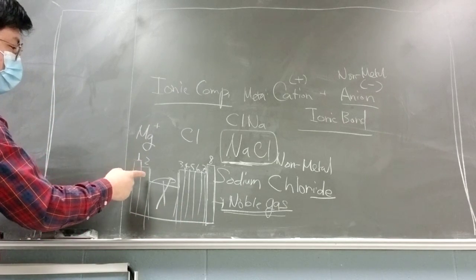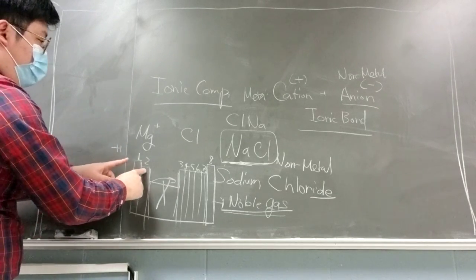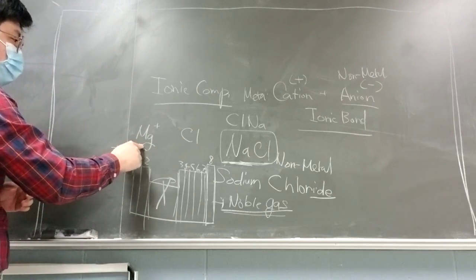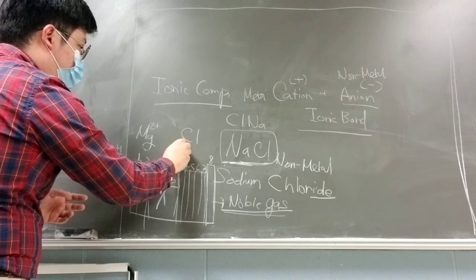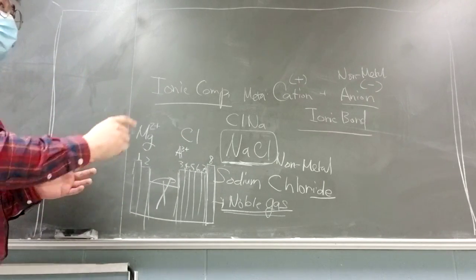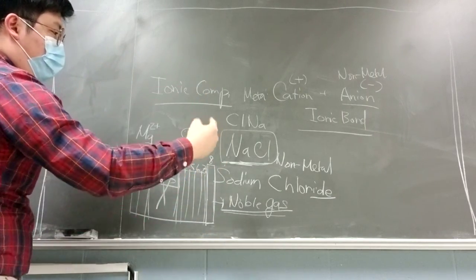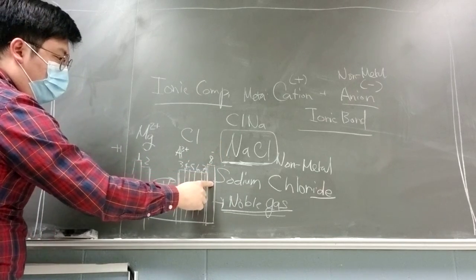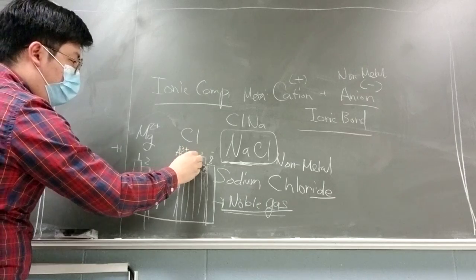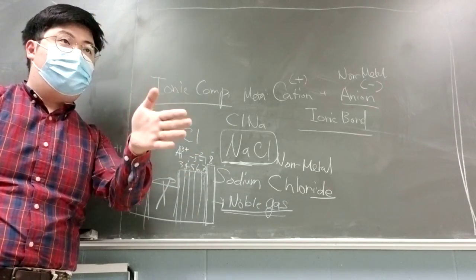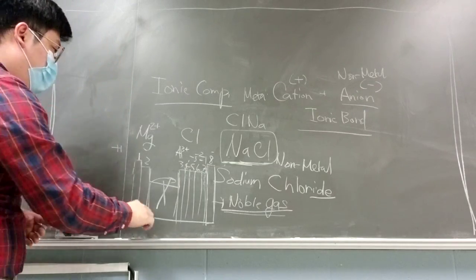Group 1 elements will have a +1 charge in ion form. Magnesium is in group 2, so it will have a 2+ charge. Aluminum is in group 3, so it has a 3+ charge. For groups 5, 6, and 7, you count from the right side: group 7 is −1, group 6 is −2, group 5 is −3. Chlorine is one column away from the last column, so it's always −1.